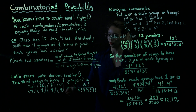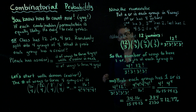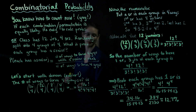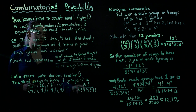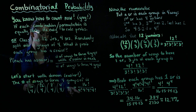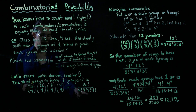If we write this all out in terms of factorials and do a bunch of canceling, this will end up equaling 16 factorial divided by 4 factorial times 4 factorial times 4 factorial times 4 factorial.